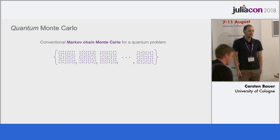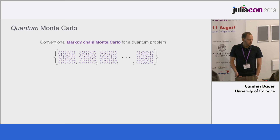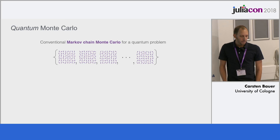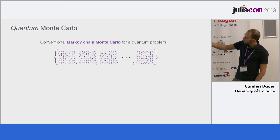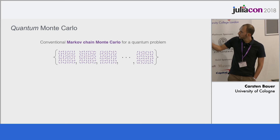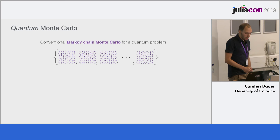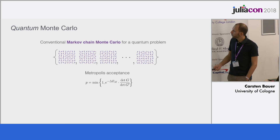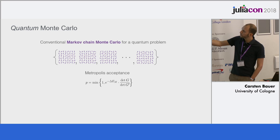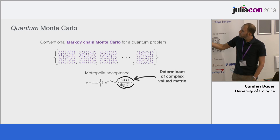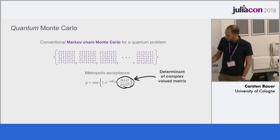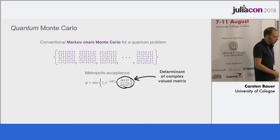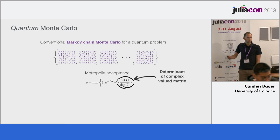For those of you who are not in the quantum business, quantum Monte Carlo is just conventional Markov chain Monte Carlo for a quantum problem. We rewrite your quantum problem in a way that it becomes amenable to classical Monte Carlo. These are the magnetic degrees of freedom — starting from a configuration, I perform local and global moves, which means taking one of those arrows and rotating them to generate a Markov chain. Whether I accept such a move or not is determined by the Metropolis probability.